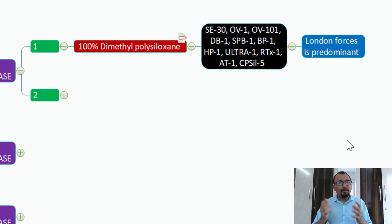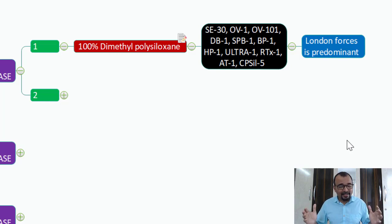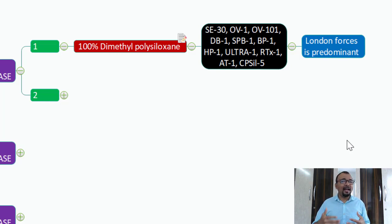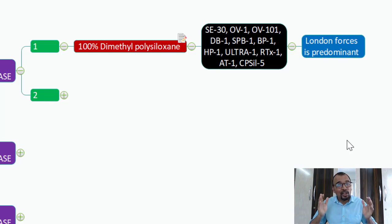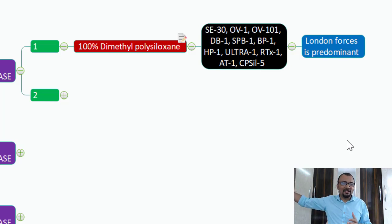How does retention happen because of London dispersion forces? The greater the size of your analyte, the greater will be the amount of interaction. As the amount of interaction increases, you will have later elution of the compound — your compound will retain for a longer time. So bigger is the molecular size, the greater will be the retention time.